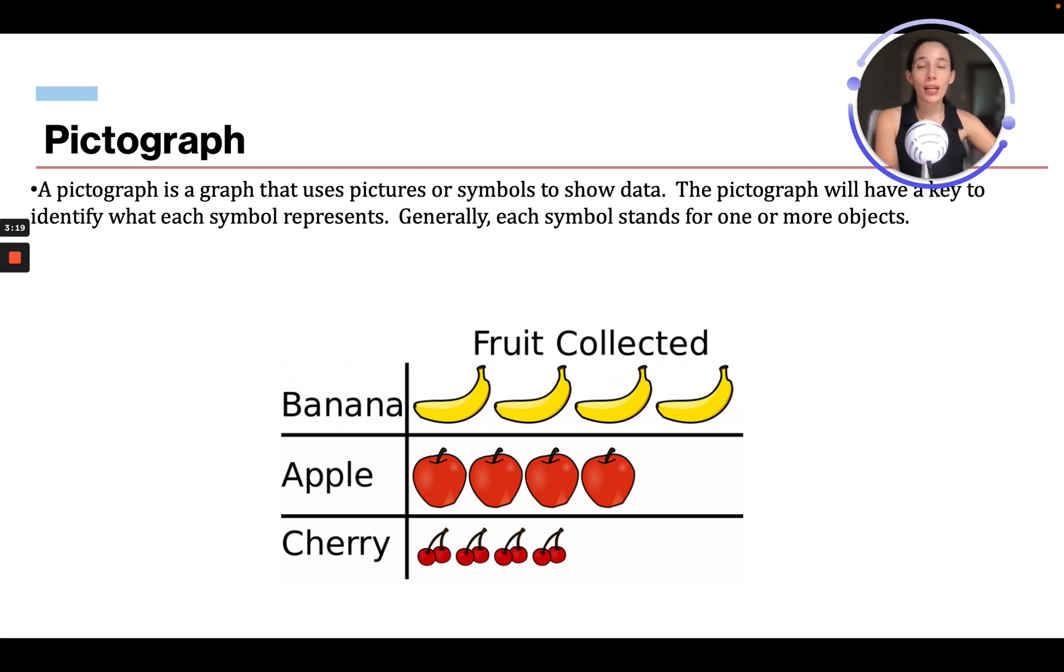A pictograph is a graph that uses pictures or symbols to show data. The pictograph will have a key to identify what each symbol represents. Generally, each symbol stands for one or more objects. So this is just showing a banana, and then there are four. There are four apples, four cherries. It's just showing the data collected, but using images.